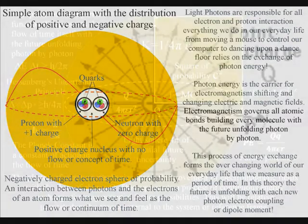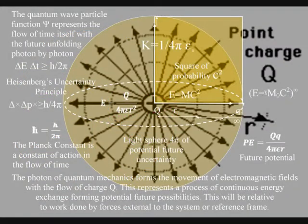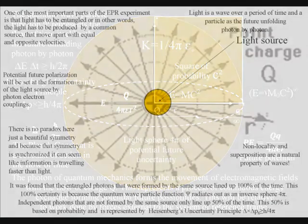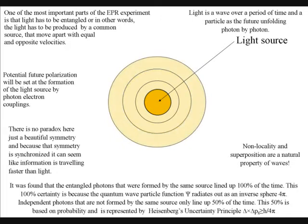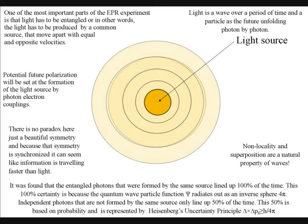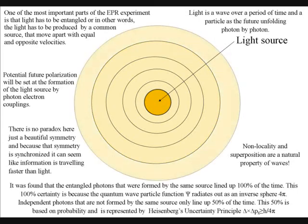The interesting thing about charge is that it can cover a large area of interstellar space. One of the most important parts of the EPR experiment is that light has to be entangled, or in other words the light has to be produced by a common source that moves apart with equal and opposite velocity.